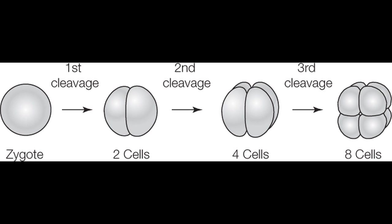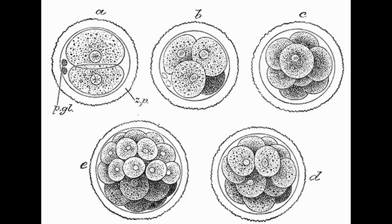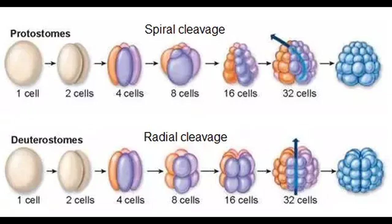With its full complement, the zygote starts to divide into daughter cells. The division of cells in the early embryo is known as cleavage. First, the zygote splits into two daughter cells, then four, then eight. Once it reaches 16 cells, it has become a solid mass called a morula. Along the way, cells orient themselves, which will eventually determine how the body plan is laid out.